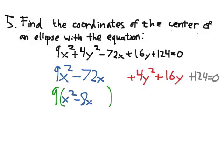And we can also factor out a 4 for the Y's. And that'll leave us with Y squared plus 4Y. Then again, I add 124 to get 0.